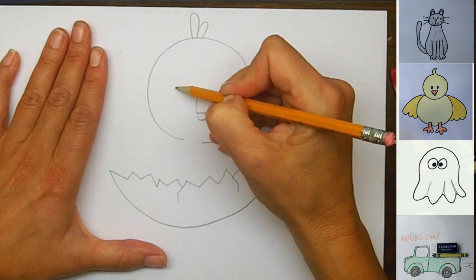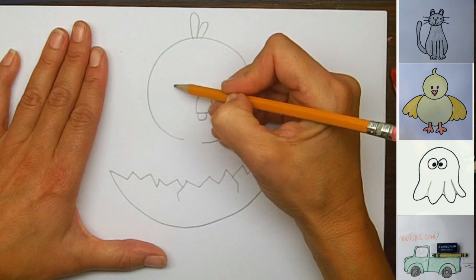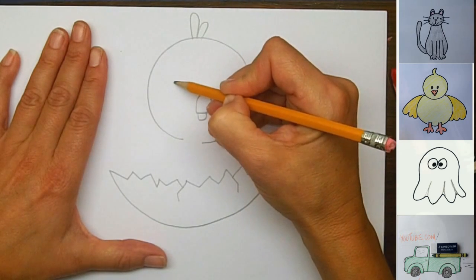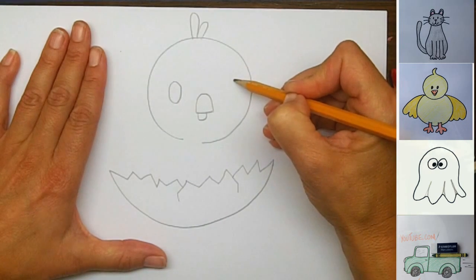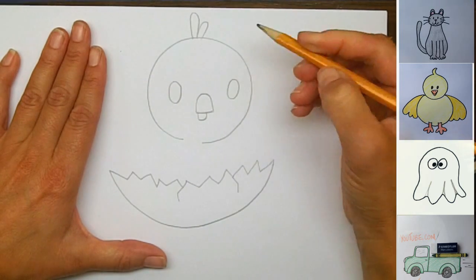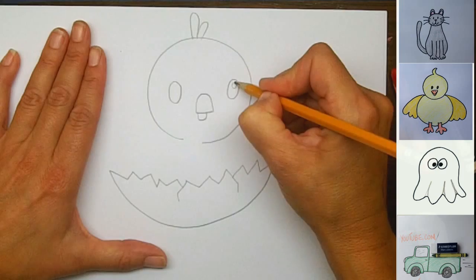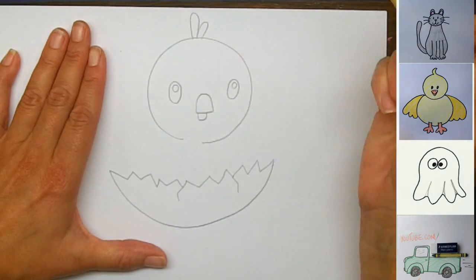And then I'll draw his eyes. So baby animals always look cute with oval eyes. So I'm going to draw a nice oval here, and another nice oval here. And I'll draw some little reflections in his eyes here, where we won't color in.